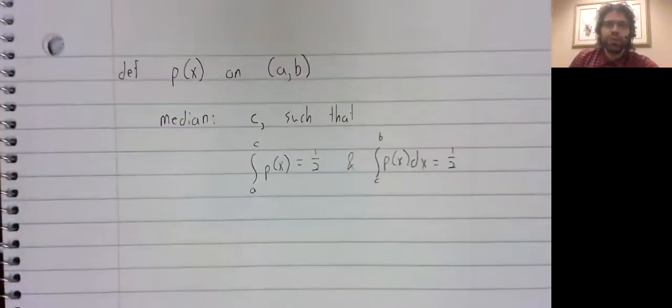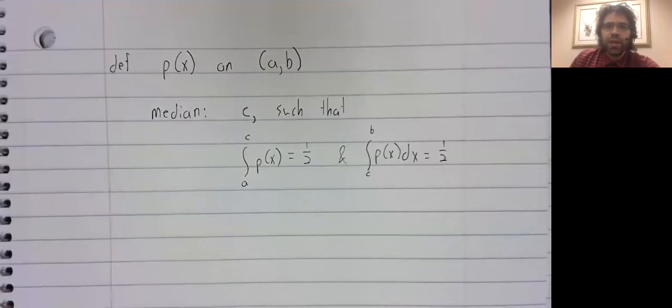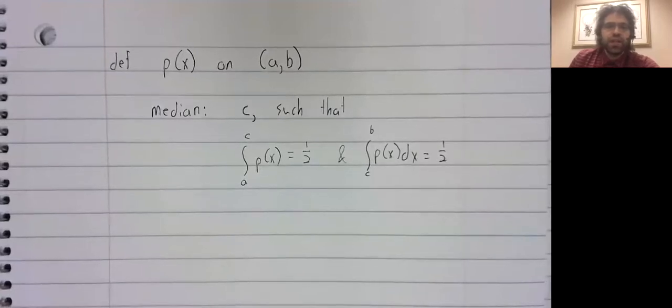For discrete probability distributions, there are two standard ways of measuring central tendencies: the mean and the median. We have the median for continuous probability distributions as well, and the definition is